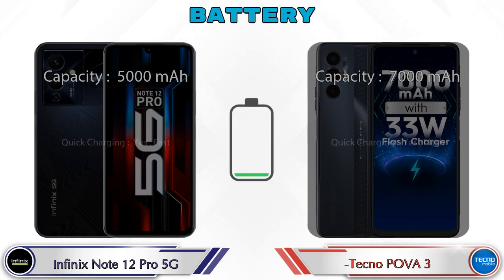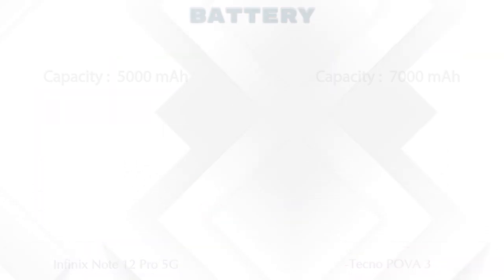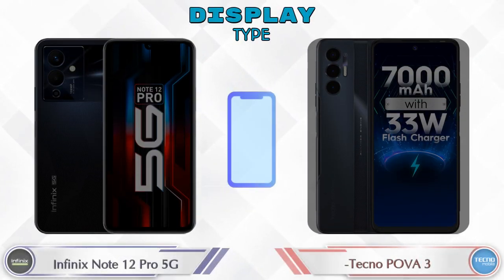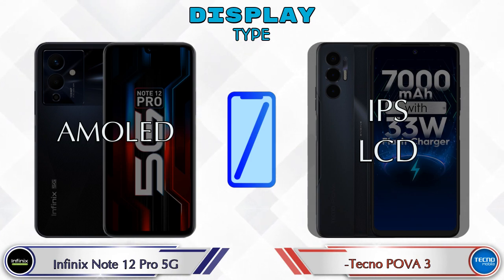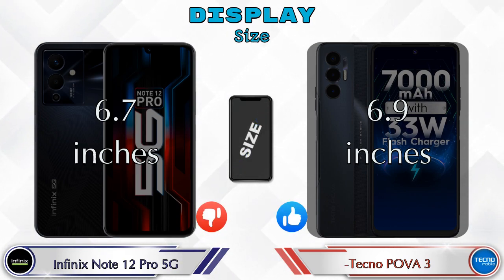Here are the complete details about battery. Now let's see the information about display. For display type, the Note 12 Pro 5G has an AMOLED display and the Power 3 has an IPS LCD display. Display size: the Note 12 Pro 5G has 6.7 inches and the Power 3 has 6.9 inches.